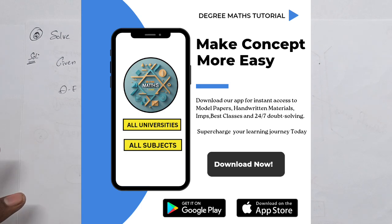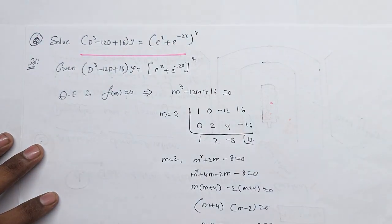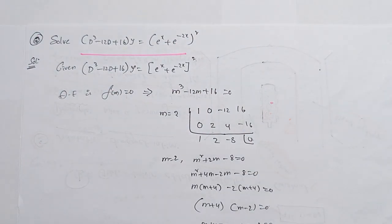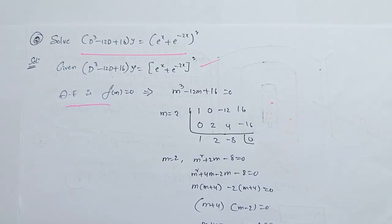Let me show you the equation. What is the equation? D² minus 12D plus 16, into y, is equal to e^(4x) plus (e^(4−2x))² whole square. This is the given original equation, and this equation is the auxiliary equation.